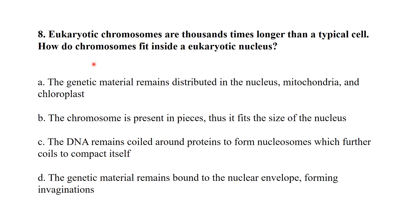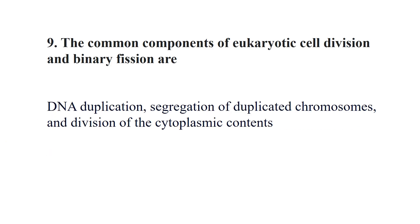Eukaryotic chromosomes are thousands of times longer than a typical cell — how do chromosomes fit inside the eukaryotic cell? The best answer: DNA remains coiled around histone proteins, forming nucleosomes, which then compact further into chromatin fibers and ultimately into chromosomes. Option C is correct.